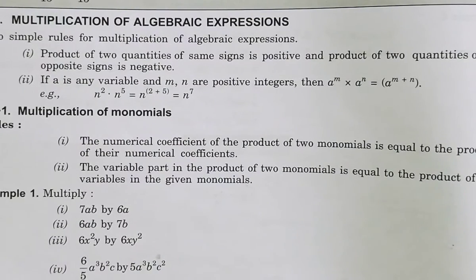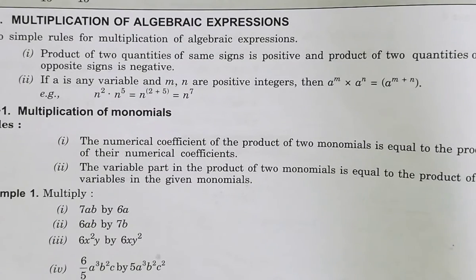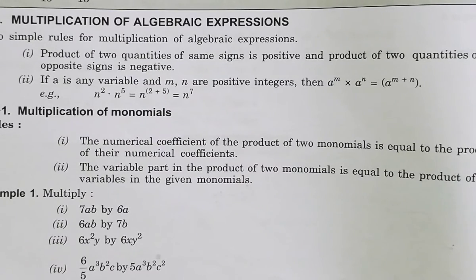Suppose 6XY is there — 6 is the numeric coefficient, while XY is the literal coefficient. So we need to see what the coefficient is and what the sign is. We will not forget this, and keeping both these things in mind, we do multiplication.